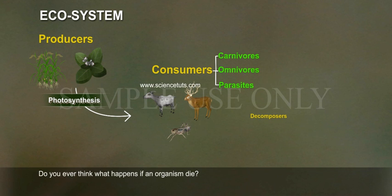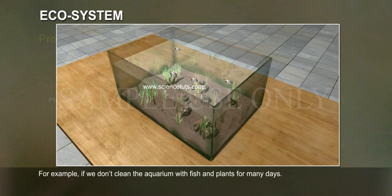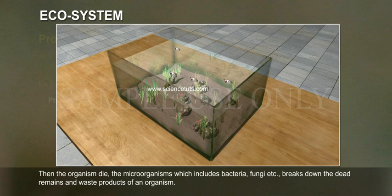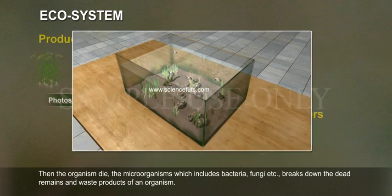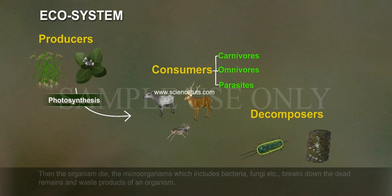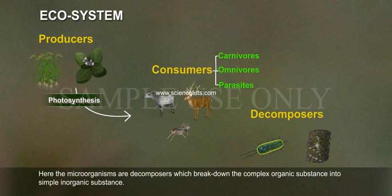Do you ever think what happens when an organism dies? For example, if we don't clean an aquarium with fish and plants for many days, then the organisms die. The microorganisms, which include bacteria and fungi, break down the dead remains and waste products of an organism. These microorganisms are decomposers which break down complex organic substances into simple inorganic substances.